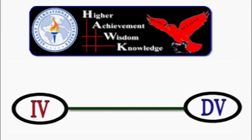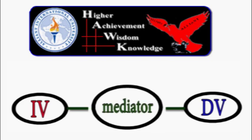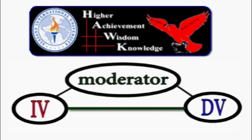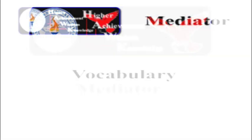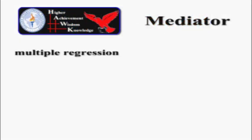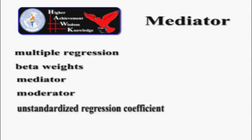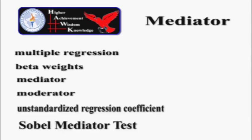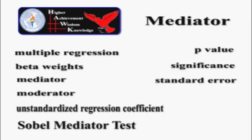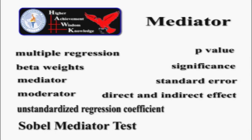Here's a quick video showing you how to tell if one of your independent variables, your IVs, is acting as a mediator or as a moderator in your multiple regression model. Some of the vocabulary used in this video will be multiple regression, beta weights, mediator, moderator, unstandardized regression coefficients, Sobel mediator test, p-value, significance, standard error, direct and indirect effect, plus others.